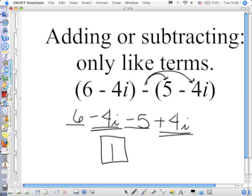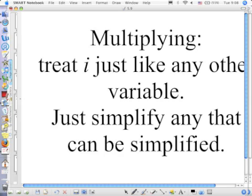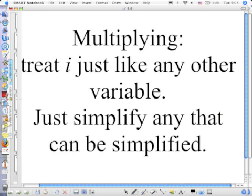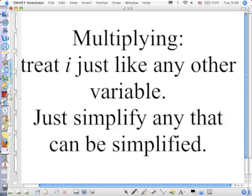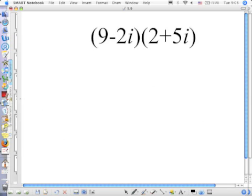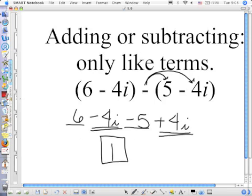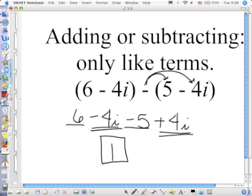The only difference when we're working with i's is at the very end, if you've got an exponent on it, you need to simplify it. When you're multiplying, you don't have to write this down, you treat i just like any other variable. Just when we get to the very end, if we can simplify it, we're going to simplify it. This is a FOIL problem. Can you go back to a clip?